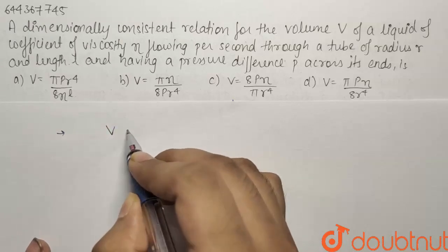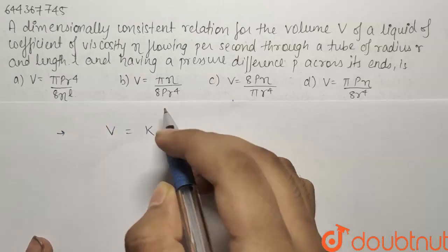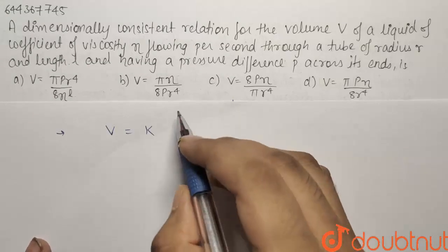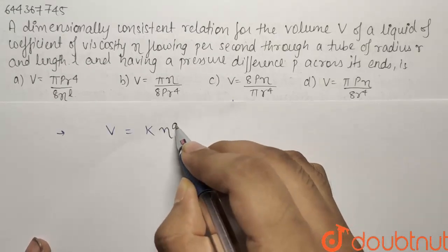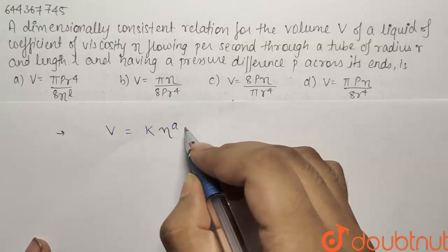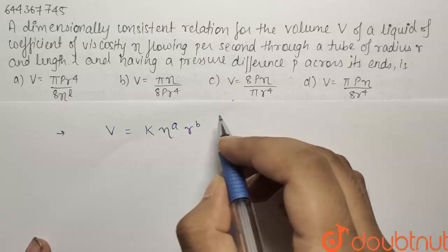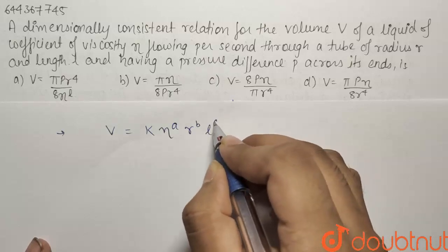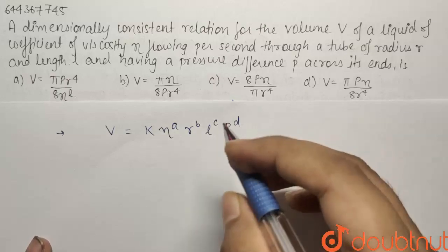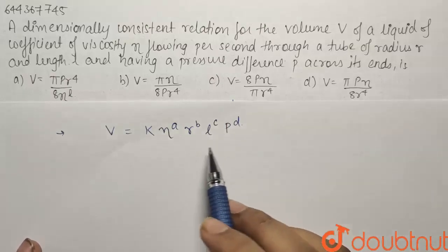So it will be let us say that is V. So it will be equals to K, K is the magnitude or a constant that will come before multiplied by the first term that is eta to the power A. Now the second dependency term that is radius to the power B, the third dependency term that is L to the power C and the final term that is pressure to the power D.